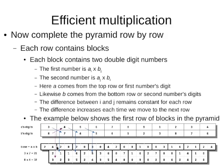So here I have three times seven is twenty-one, and next I have eight times four, which is thirty-two. Now go to the next block: four times four is sixteen, seven times five is thirty-five. Go to the next block: five times five is twenty-five, four times six is twenty-four. And so on — I construct the whole row.